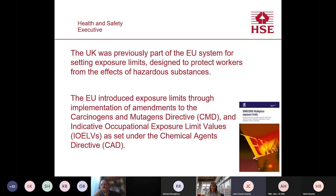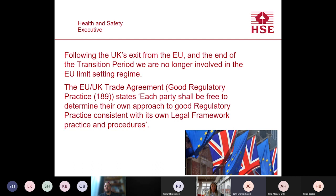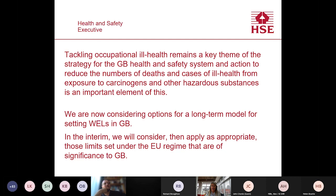Following the UK's exit from the EU and the end of the transition period, we're no longer involved in the EU limit-setting regime. The EU-UK Trade Agreement states that each party is free to determine their own approach to good regulatory practice consistent with its own legal framework and procedures. The COSHH regulations require adequate control of exposure to all hazardous substances, and exposure to carcinogens and asthmagens must be reduced to as low as is reasonably practicable — ALARP. Tackling occupational ill health remains a key theme of the strategy for the GB health and safety system.